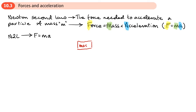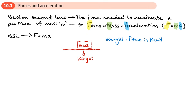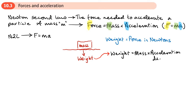I put W to stand for weight. Weight is a force measured in Newtons. But sometimes in questions we're not given the weight — we are given the mass of the object. So we need to work out the force, and we use the acceleration due to gravity. The weight of this object in Newtons equals the mass of the object times the acceleration due to gravity.